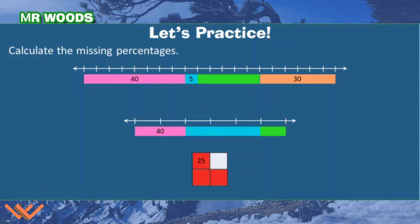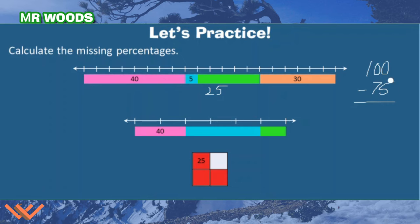Let's practice — calculate the missing percentages. If I have 40 and 5, that's 45, plus 30, that's 75. What's the missing percentage? 25. How do I know? Because the whole is 100%, and I have 45 plus 30 which is 75. I subtract: 10 minus 5 is 5, and 9 minus 7 is 2 — so that's 25. Let's look at the bar model below.